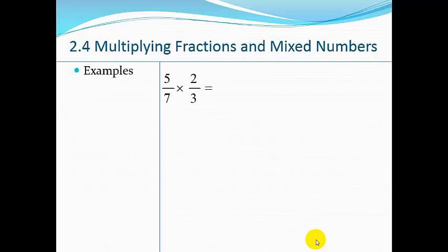Okay, so here we go. Five times two, and seven times three. I don't see anything that I can divide out from the numerator or the denominator, so I'm going to go ahead and just multiply straight across, so ten over twenty-one.